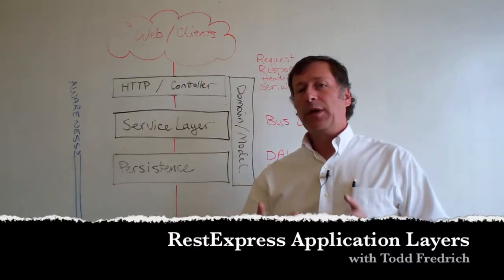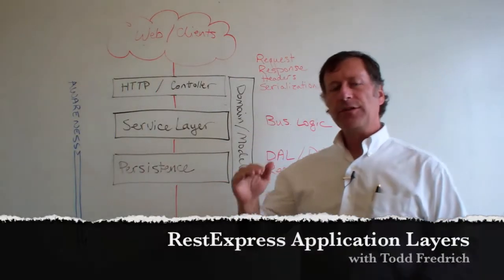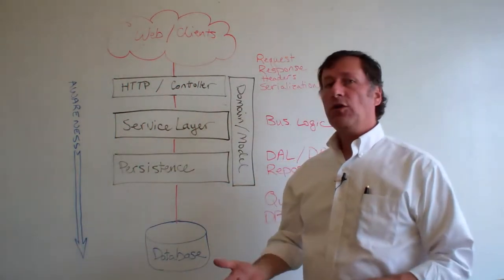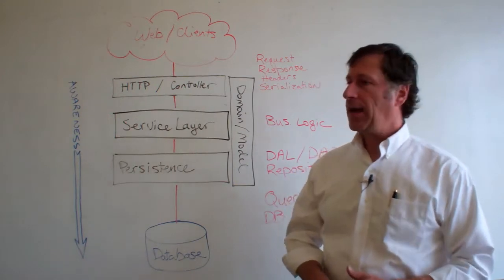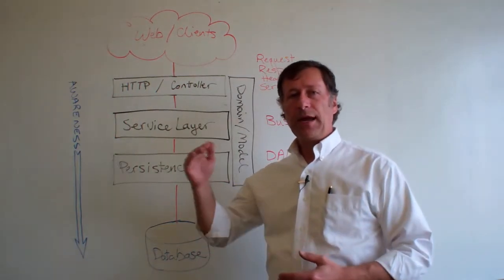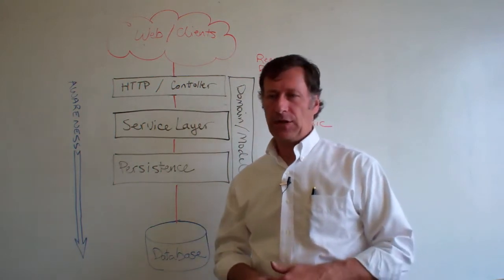Hey, I just want to go over really quickly the layers that are created in a REST Express API when you use one of the Maven archetypes. So it follows very closely the layers in a typical Java web application.